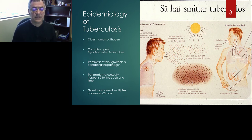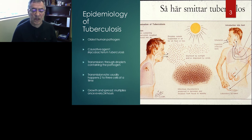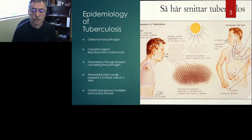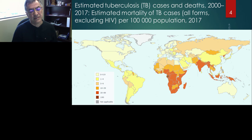This is a bacterium that is fairly slow growing — it multiplies about once every 24 hours. Compare that to other mycobacterium, such as smegmatis, which is in the same group, and smegmatis multiplies about once every half an hour. So given that it's growing so slowly, it's actually a surprise that it has spread so successfully all around the world.